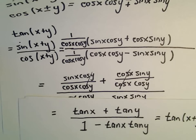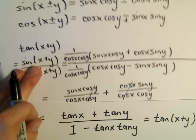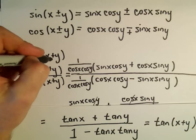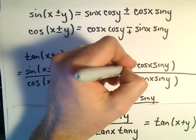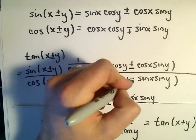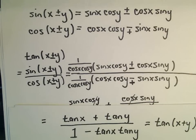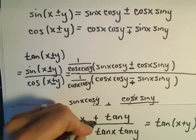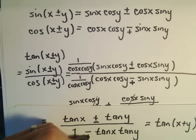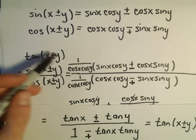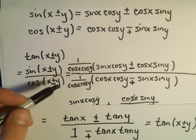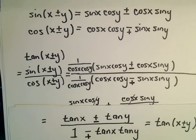Yet another identity just by remembering a couple others and doing a little bit of algebra. Notice if there had been a minus sign originally, the numerator would have turned into a negative and the denominator into a positive — that's really the only difference. So you can do the exact same thing to find the identity for tangent of x minus y.